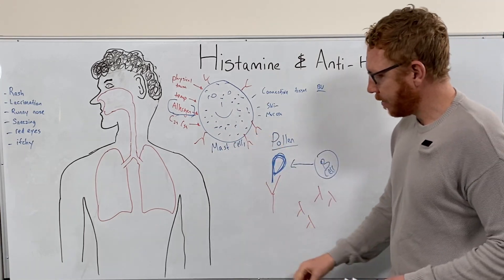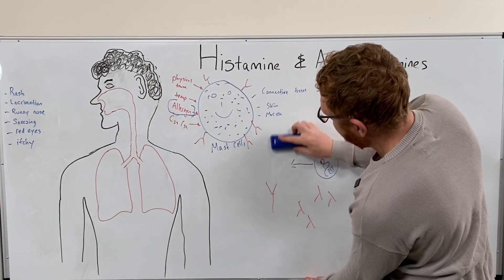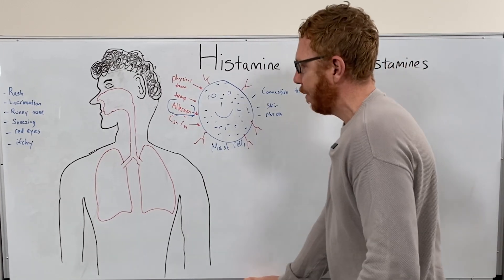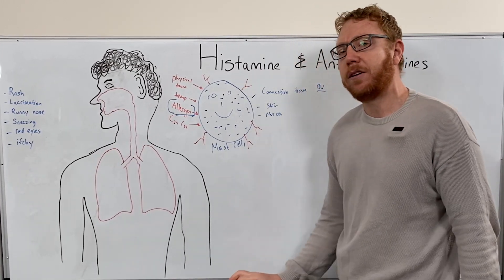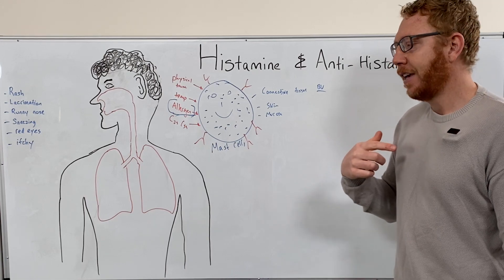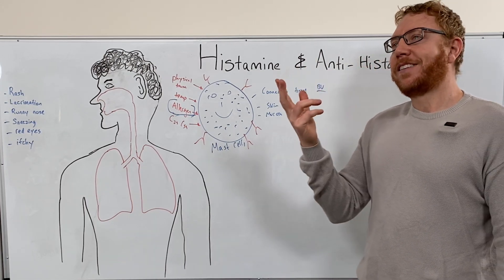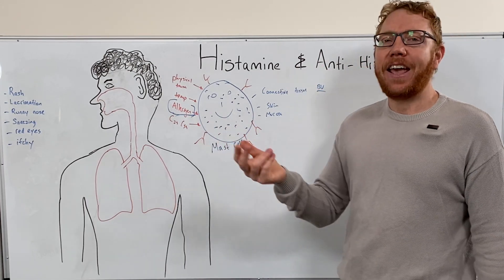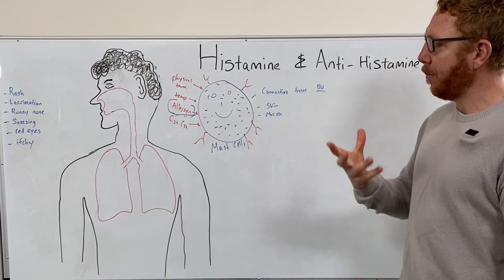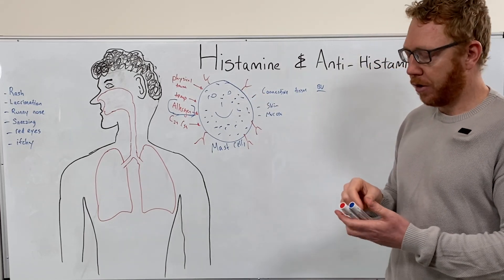The mast cell has met the pollen and releases histamine. This isn't only about pollen — it could be anything you could be allergic to: peanuts, gluten, cat hair, seafood. Anything that people can potentially be allergic to, the same mechanism occurs.